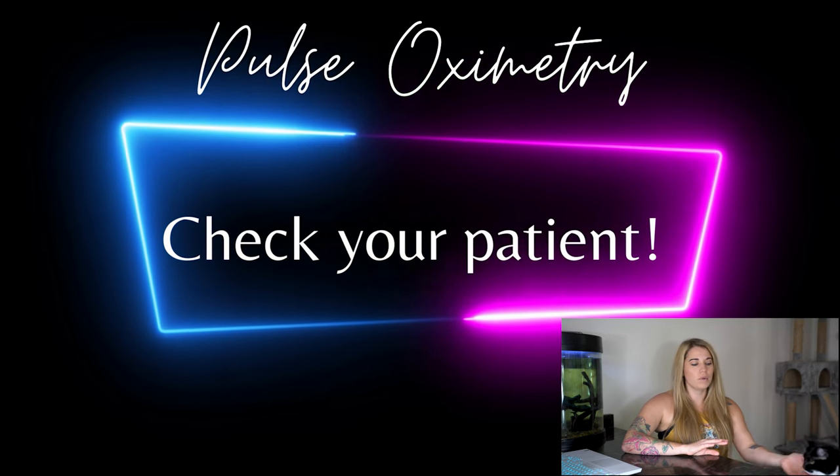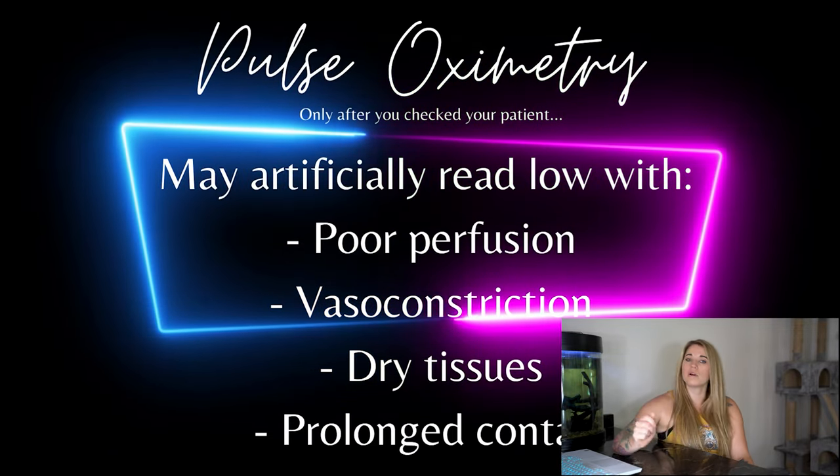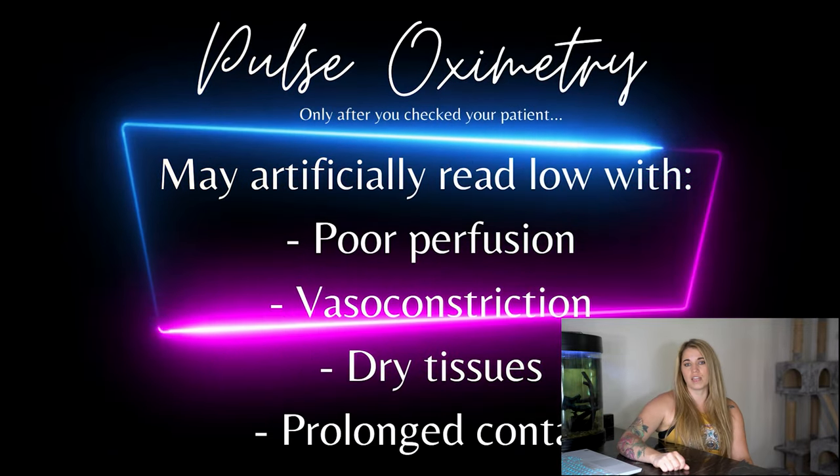The probes tend to read incorrectly in animals with dry tissue, after the probe has been in the same place for an extended period of time, or if they've had medications that can cause vasoconstriction. Things you can do to get your pulse ox to read more appropriately: put a wet gauze between their tongue and the probe, and make sure you move the probe around frequently throughout your anesthetic procedure.